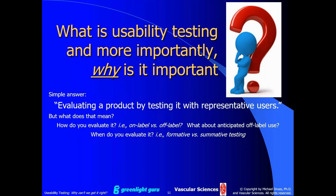This begs the question: does FDA have the statutory authority to regulate formative usability testing? One could easily argue that because it's still part of development, FDA does not have the authority to regulate it, even though in many cases they still try. When it comes to summative usability testing, that occurs after the point of design freeze, and it is definitely part of your final V&V testing — definitely under FDA's bailiwick. The purpose of summative testing is to make sure your device can be used the way it's intended to be used.